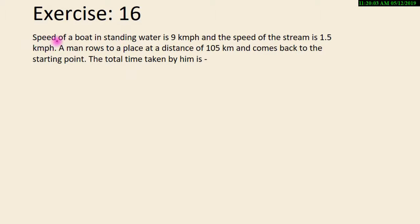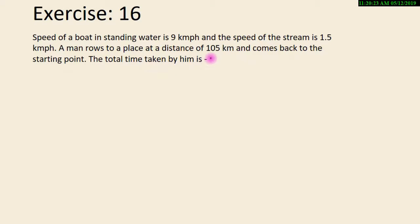The speed of a boat in standing water is 9 km per hour and the speed of the stream is 1.5 km per hour. A man rowed to a place at a distance of 105 km and comes back to the starting point. The total time taken by him is equal to what?